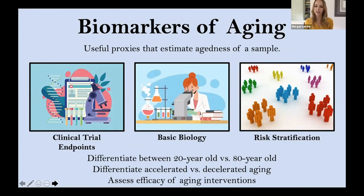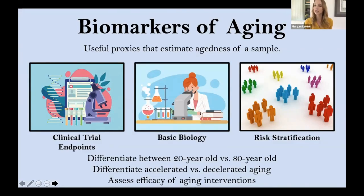The goals of these biomarkers of aging are first, most simply, just to differentiate someone who's 20 years old from someone who's 80 years old. But probably more importantly, among people who are the same chronological age, can we differentiate people who are accelerated agers versus those who are decelerated agers — people who are aging faster than we would expect. And then finally, to actually look at modifiability: can we actually intervene in the aging process and assess whether some specific intervention is actually effective in slowing the aging process?